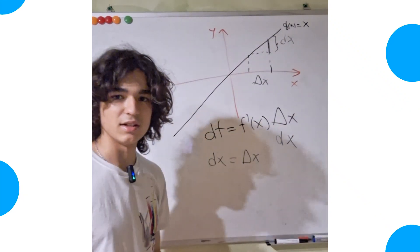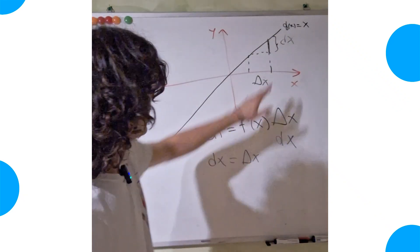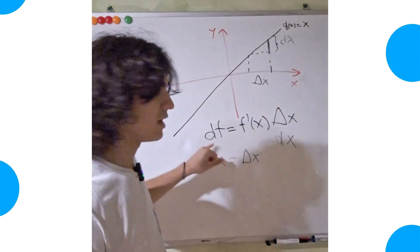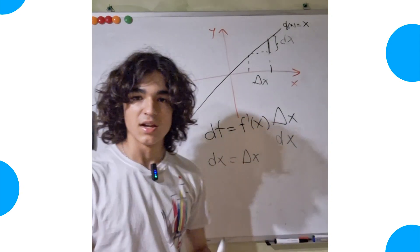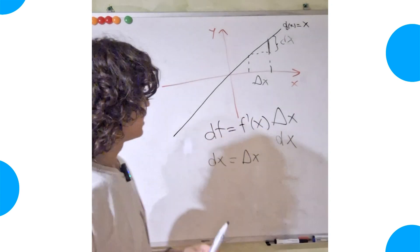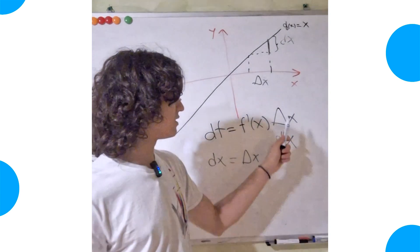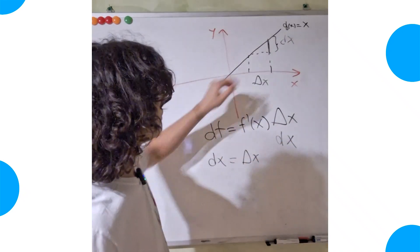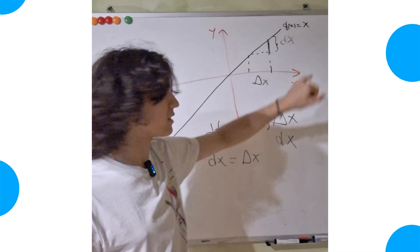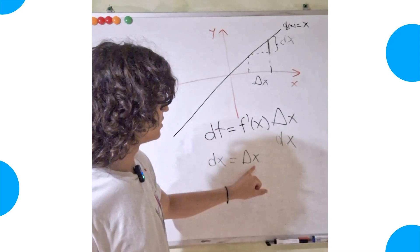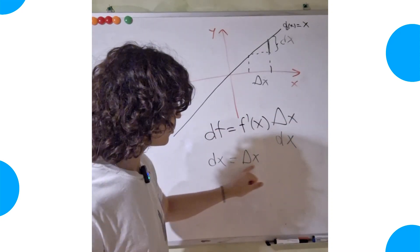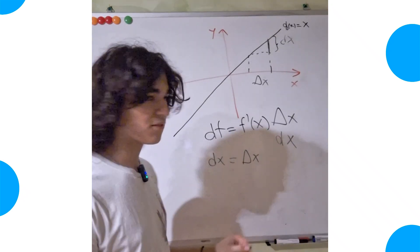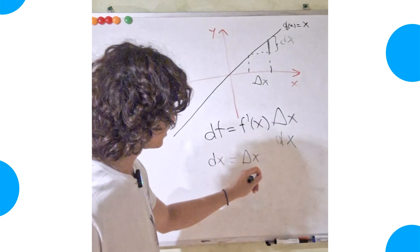And this difference here is our dx, the dg, call it whatever you want to. So as you can see, also the dx as this df here is a finite difference. And that's the main reason I was replacing this delta x by dx, because the differential of the function g of x equals x equals to the increment.